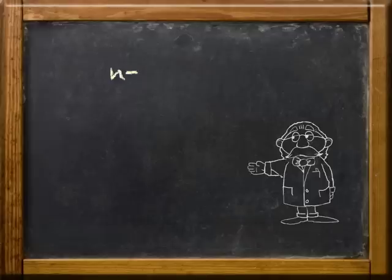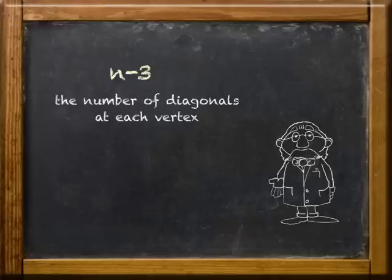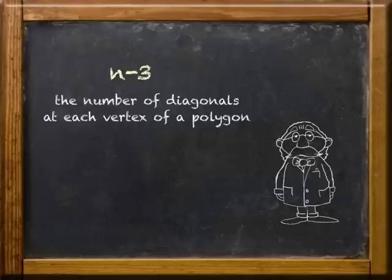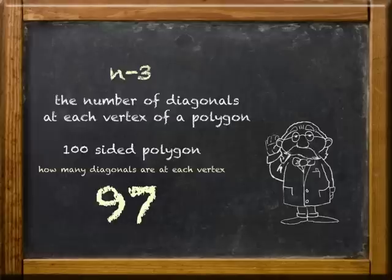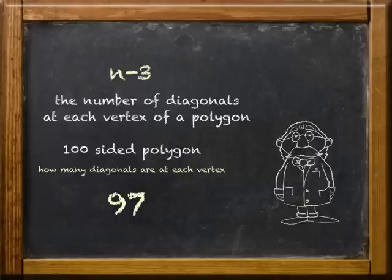So what does that expression n minus three represent? It's the number of diagonals at each vertex of a polygon. So you remember that one hundred-sided polygon we looked at? What if I asked how many diagonals were at each vertex? Did I hear ninety-seven? You got it. One hundred minus three gives you ninety-seven. That's all there is to it.